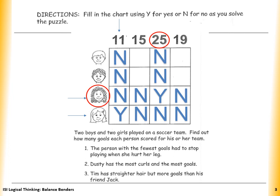The last clue tells me that Tim has straighter hair but more goals. So we are talking about this guy over here and the more goals, which is number 19. So we put Y over here and fill the other boxes with N.